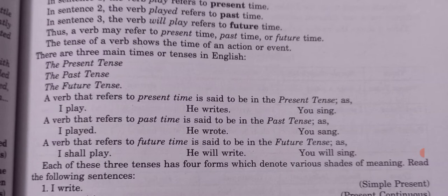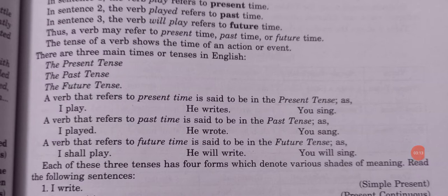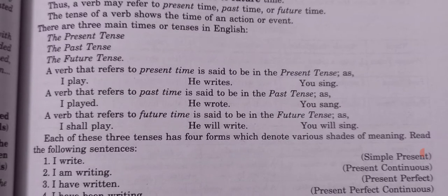Examples of present tense: I play, he rides, you sing. A verb that refers to past time is said to be in the past tense — examples: I played, he wrote, you sang. For future tense, a verb refers to future time — examples: I shall play, he will play, you will sing.